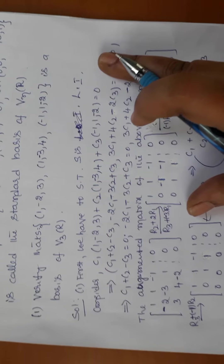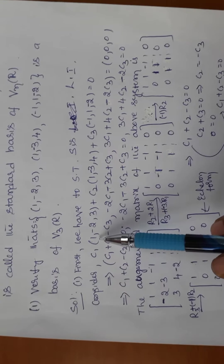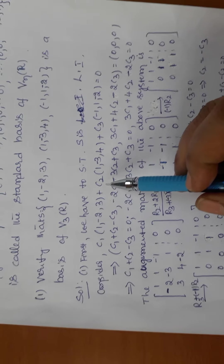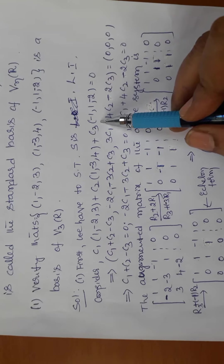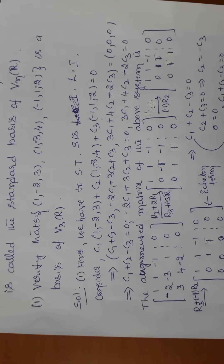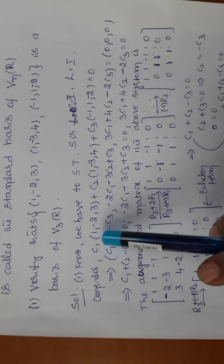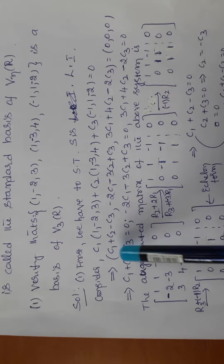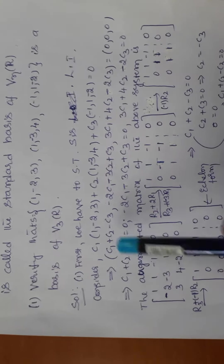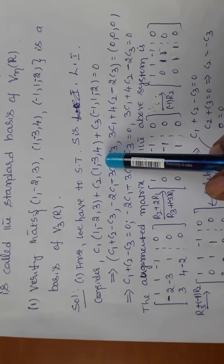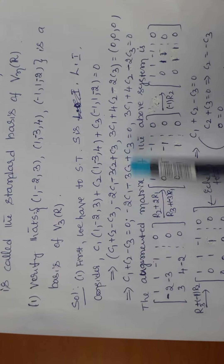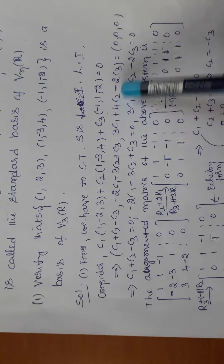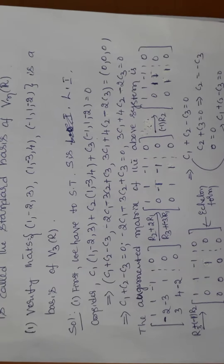To show S is linearly independent, consider c1·(1,-2,3) + c2·(1,-3,4) + c3·(-1,1,-2) = 0. Multiplying by c1, c2, c3 and collecting the first, second, and third coordinates, we get: first coordinate c1+c2-c3, second coordinate -2c1-3c2+c3, third coordinate 3c1+4c2-2c3, all equal to the zero vector (0,0,0).